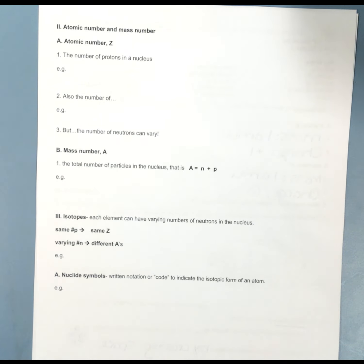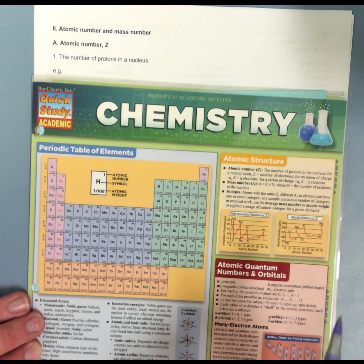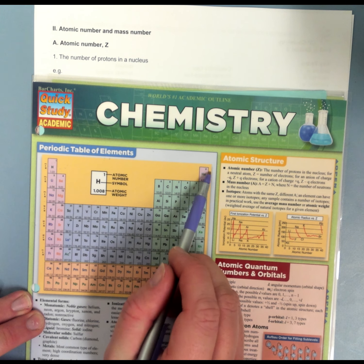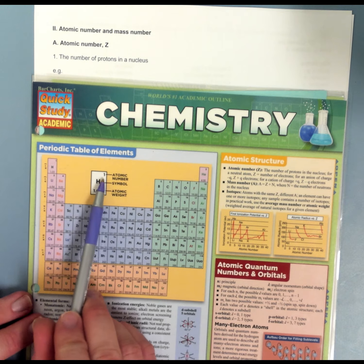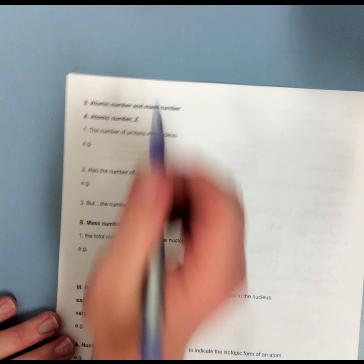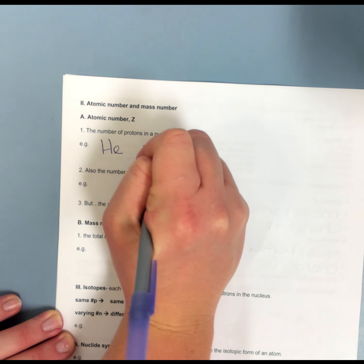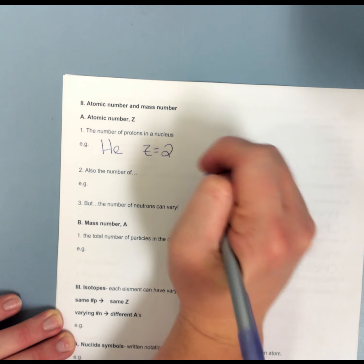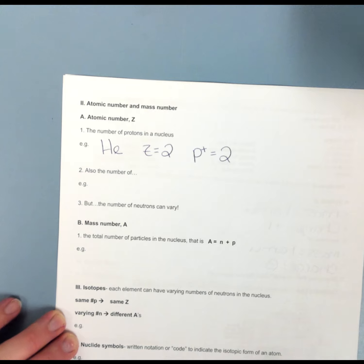If I'm looking at a periodic table, helium, for example, has two protons in the nucleus. That, in this periodic table, is in the top corner. H-E, Z equals 2, which means I have two protons.